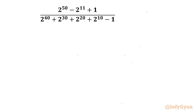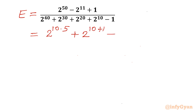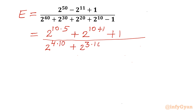Let's get started by writing the given expression as E. I can rewrite the exponents: 2 power 10 times 5, plus 2 power 10 plus 1, plus 1, divided by 2 power 4 times 10, plus 2 power 3 times 10, plus 2 power 2 times 10, plus 2 power 10, minus 1.